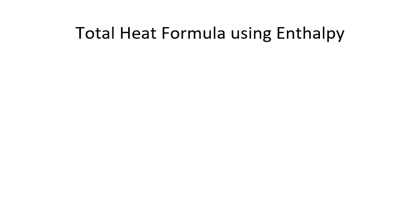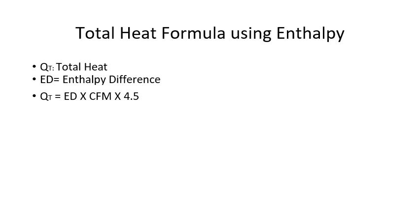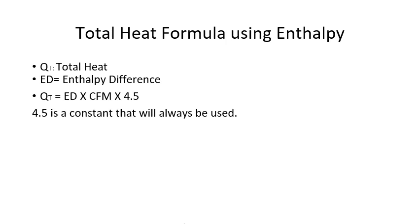Our total heat formula takes on the same structure as our sensible heat and latent heat formulas. We're looking for our total heat — QT in this example — and we need our enthalpy difference. Here's the formula: total heat equals enthalpy difference times CFM times 4.5. That 4.5 is a constant that will always be used. The sensible heat formula had a constant of 1.08, the latent heat formula had a constant of 0.68, and the total heat formula has a constant of 4.5. The structure is: difference of heat times CFM times a constant.